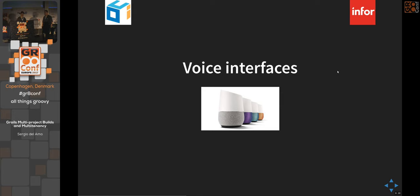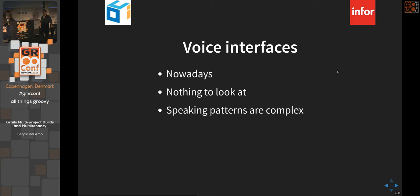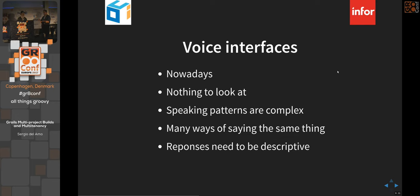And now we arrive at voice interfaces. There's nothing to look at — no visual output. Speaking patterns are complex: users might say 'tell me a joke,' 'tell me a good joke,' or 'make me laugh' — all of these need to map to the same code. We have to translate human language down to binary to dispatch and execute.